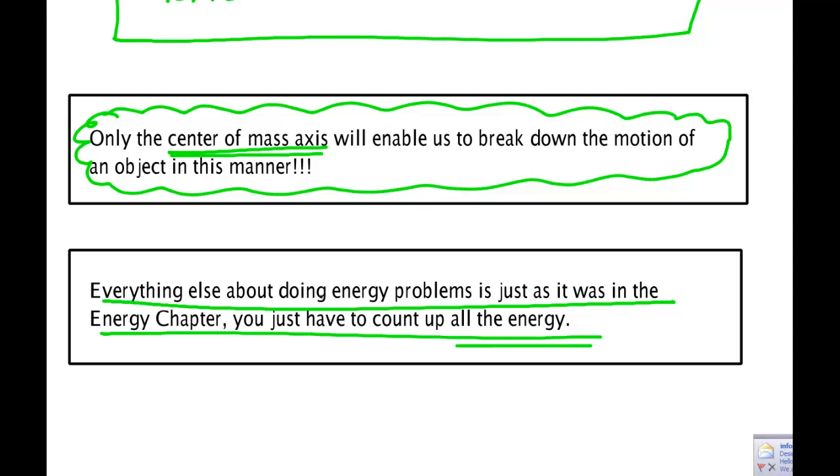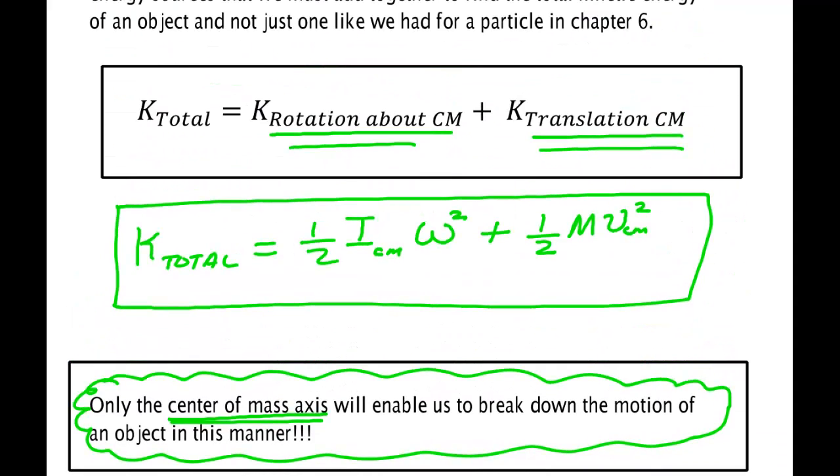Now, what we need to do is to go and look at some general problems. Let me tell you that in general, omega and the speed of the center of mass are totally independent.